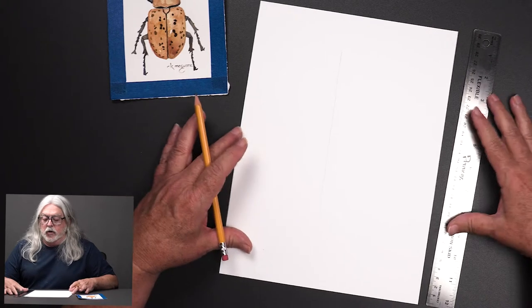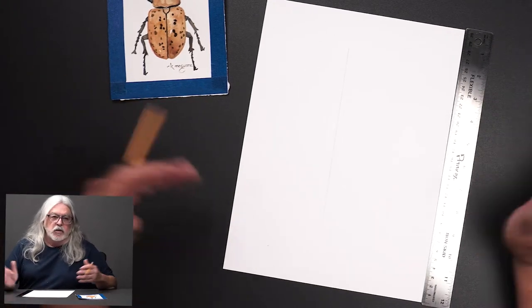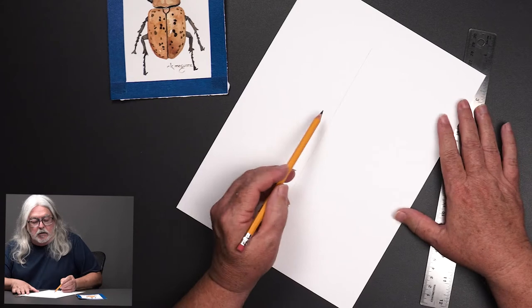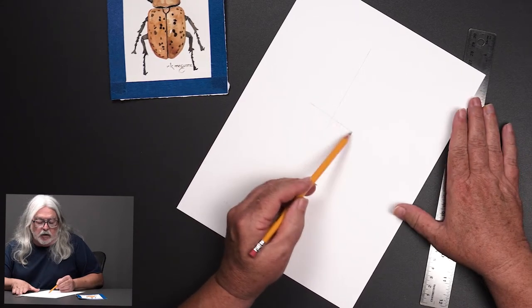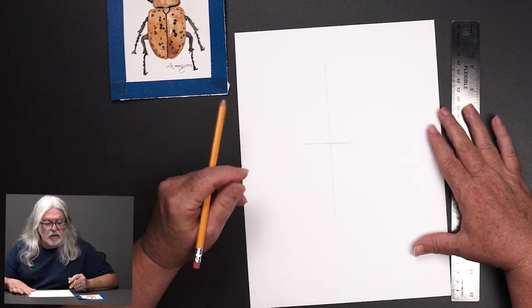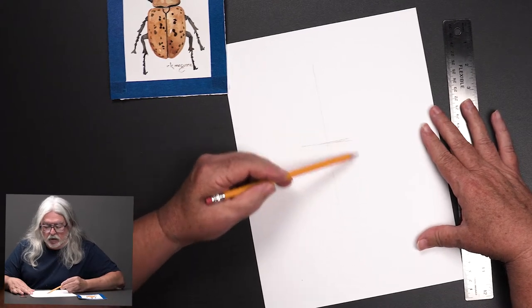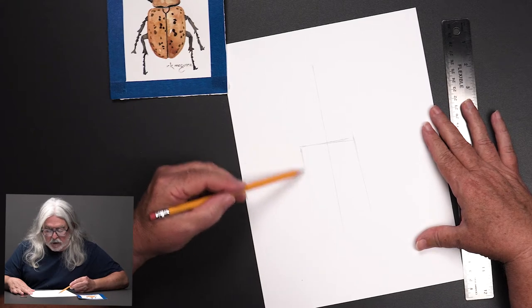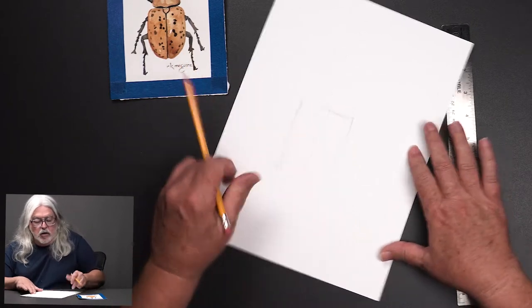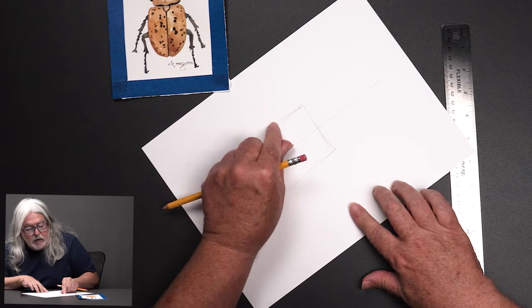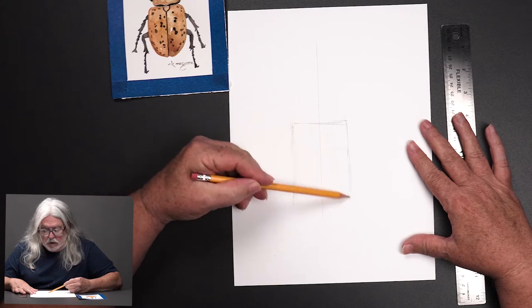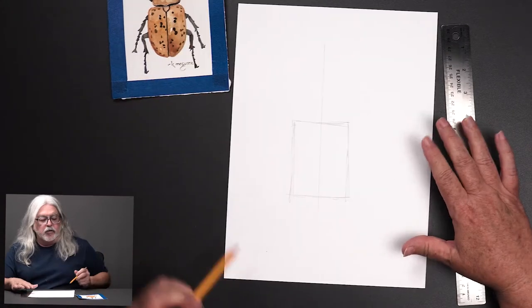What we're going to start out with is the back shell, the thorax. So I'm going to just draw a box. I'm not going to try to get that shape exactly right. What we want though is a box that is same distance from one side to the other.